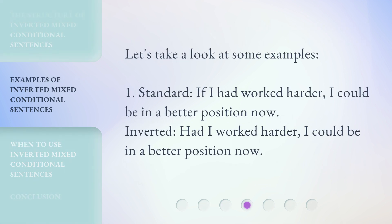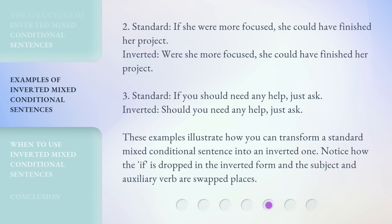Let's take a look at some examples. Example 1 — Standard: 'If I had worked harder, I could be in a better position now.' Inverted: 'Had I worked harder, I could be in a better position now.' Example 2 — Standard: 'If she were more focused, she could have finished her project.' Inverted: 'Were she more focused, she could have finished her project.' Example 3 — Standard: 'If you should need any help, just ask.' Inverted: 'Should you need any help, just ask.' These examples illustrate how you can transform a standard mixed conditional sentence into an inverted one. Notice how the 'if' is dropped in the inverted form and the subject and auxiliary verb swap places.